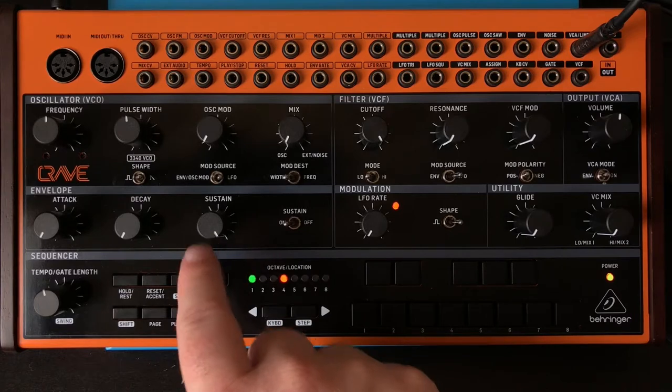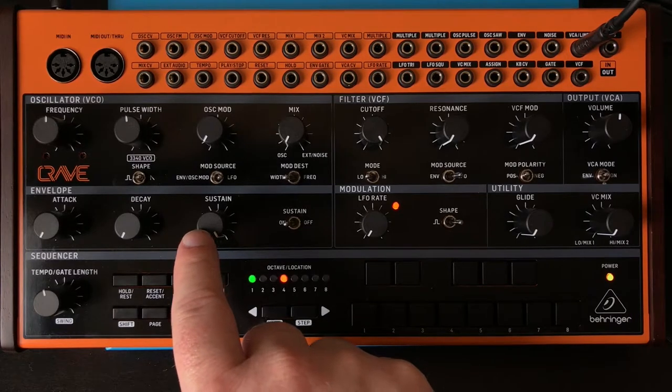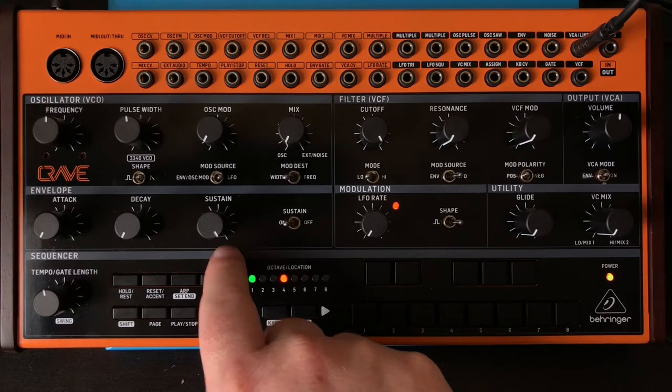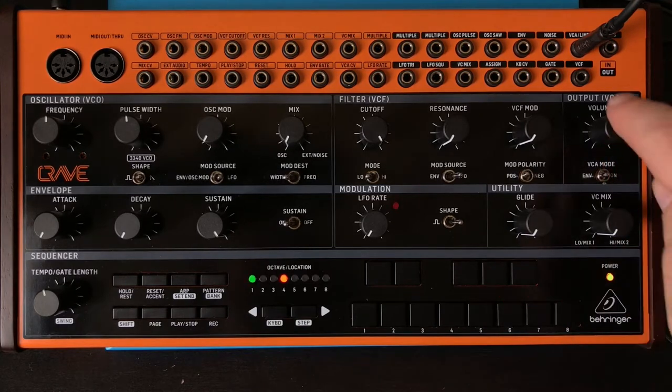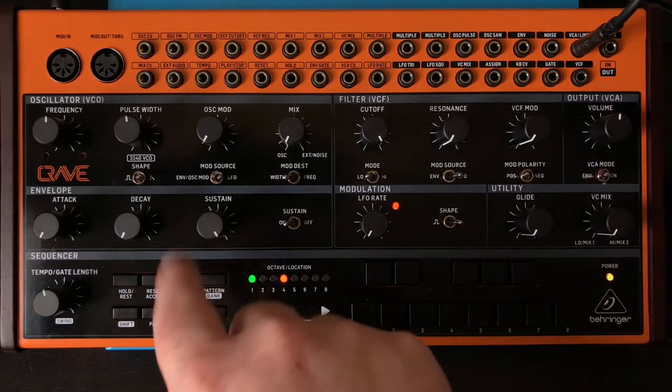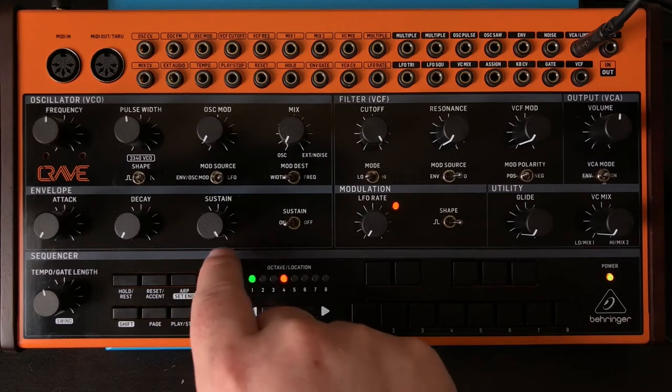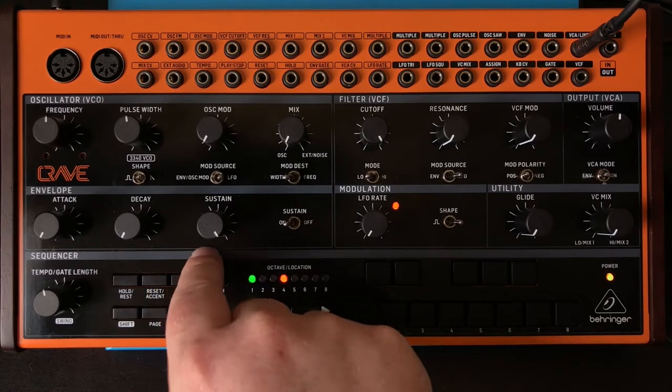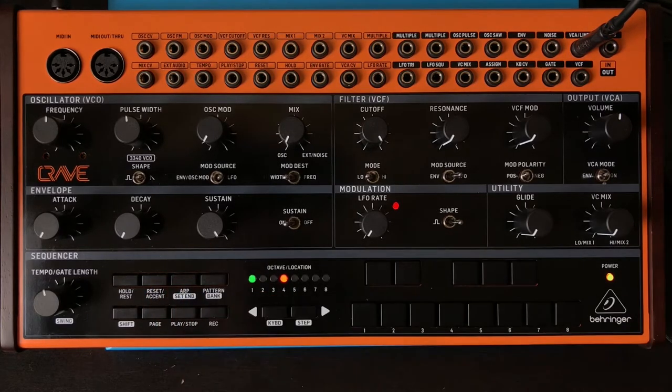Okay. So the sustain knob is a level of zero to 100% of whatever this is. So if I was to turn this up all the way, then the ratio of what this does is the sustain. It would still either let nothing through, or all of it through.